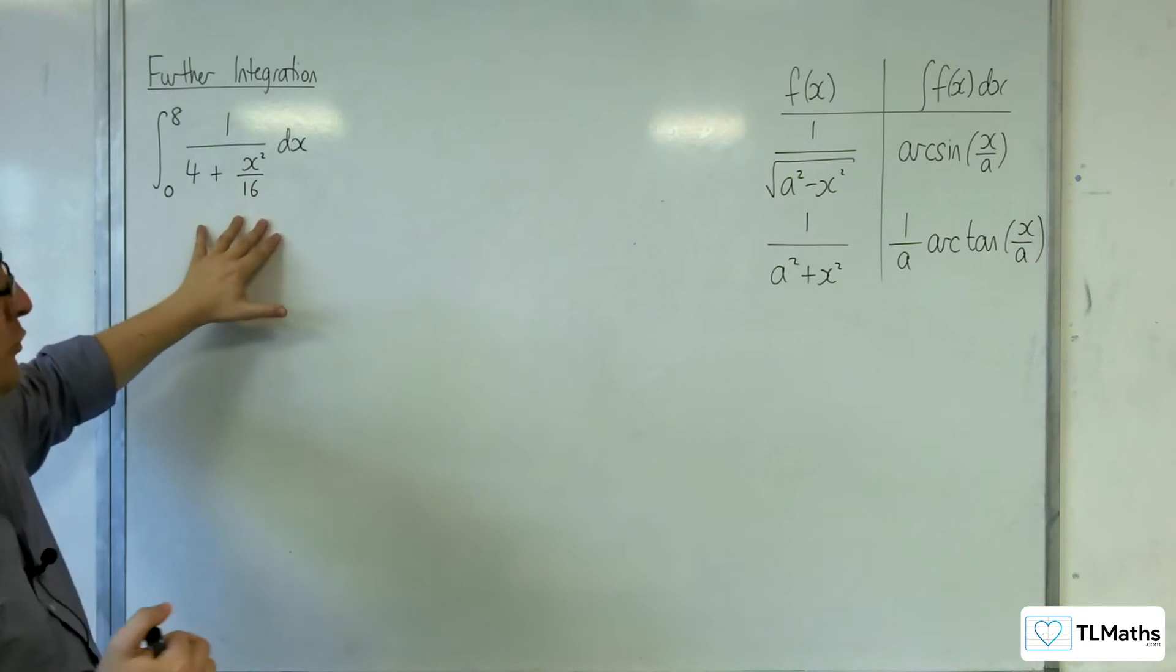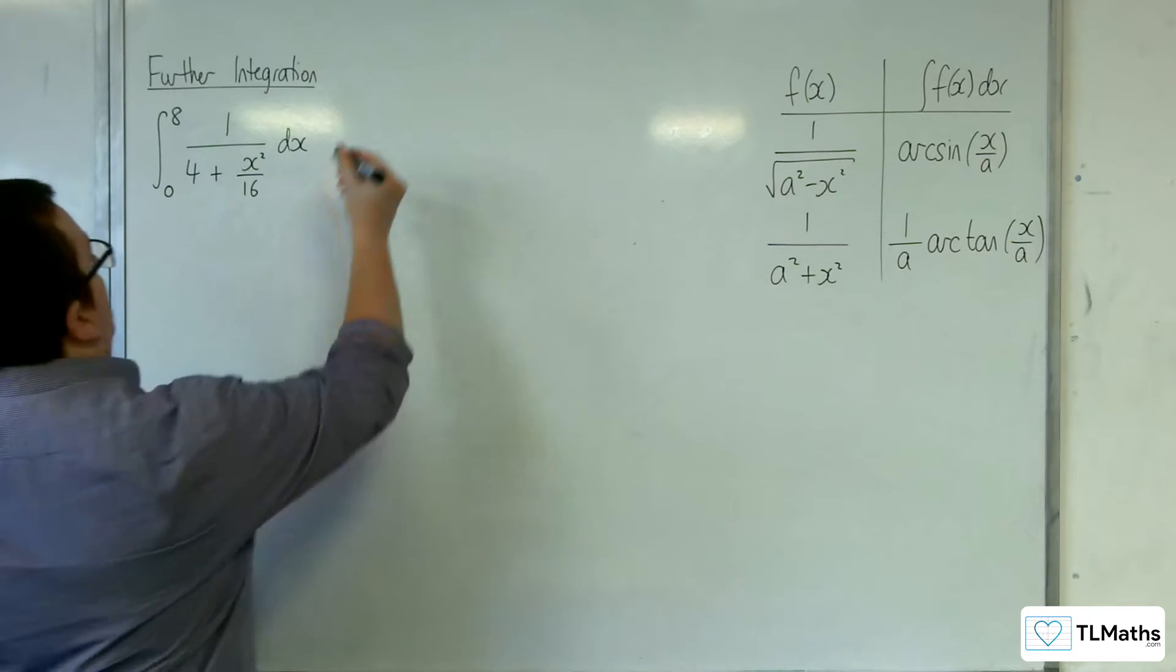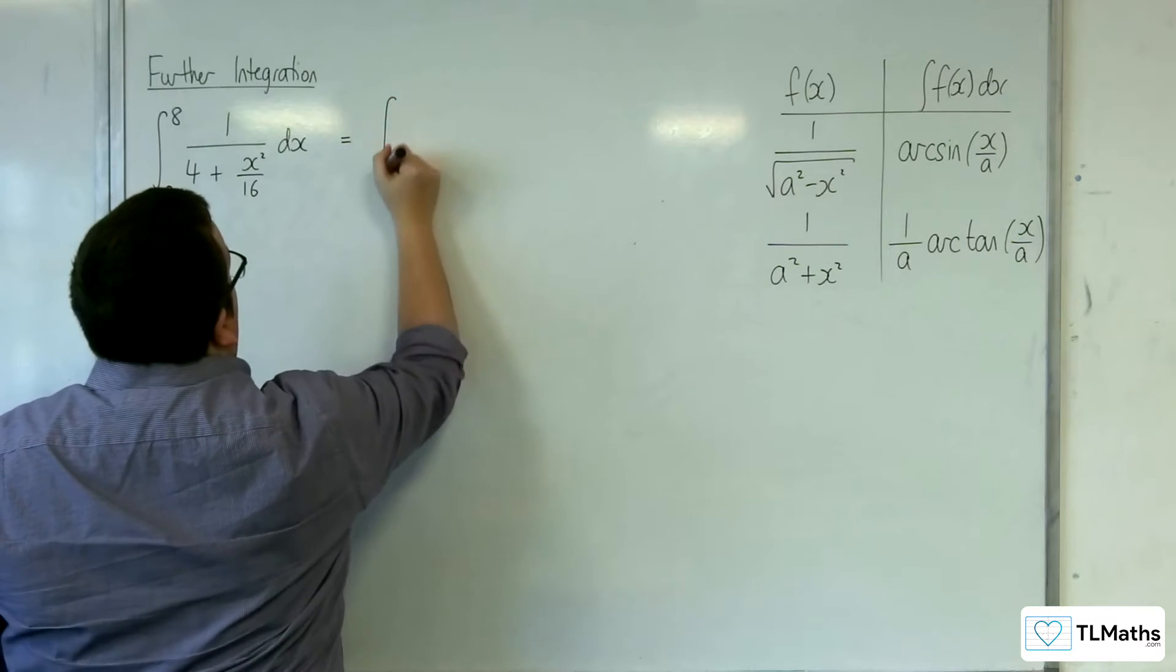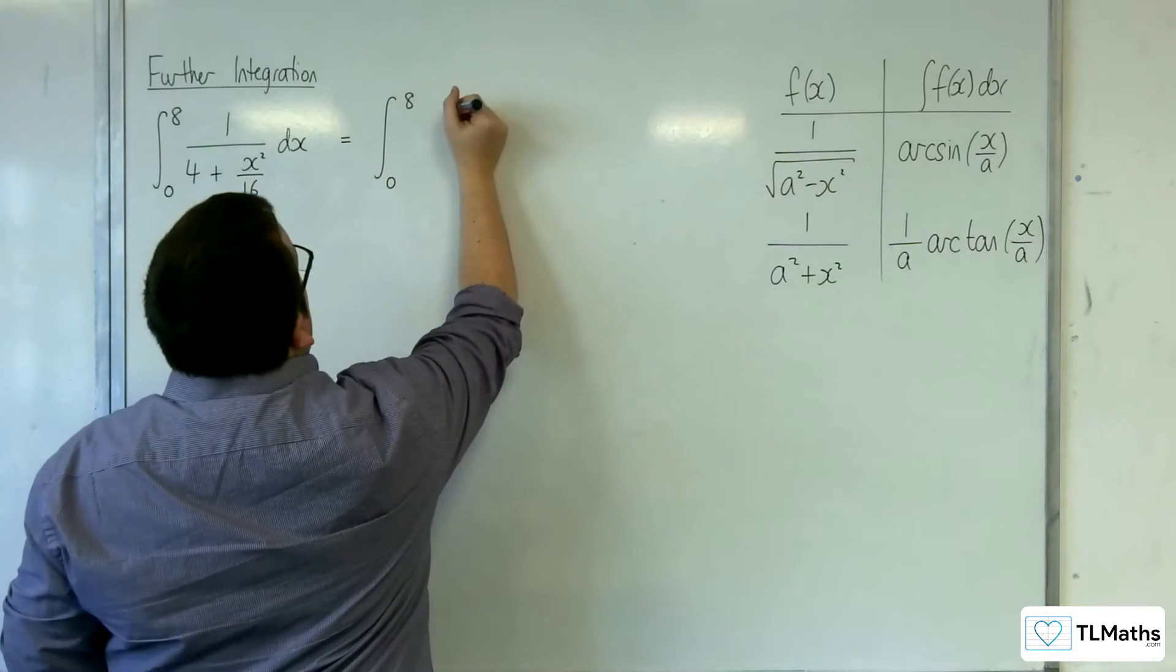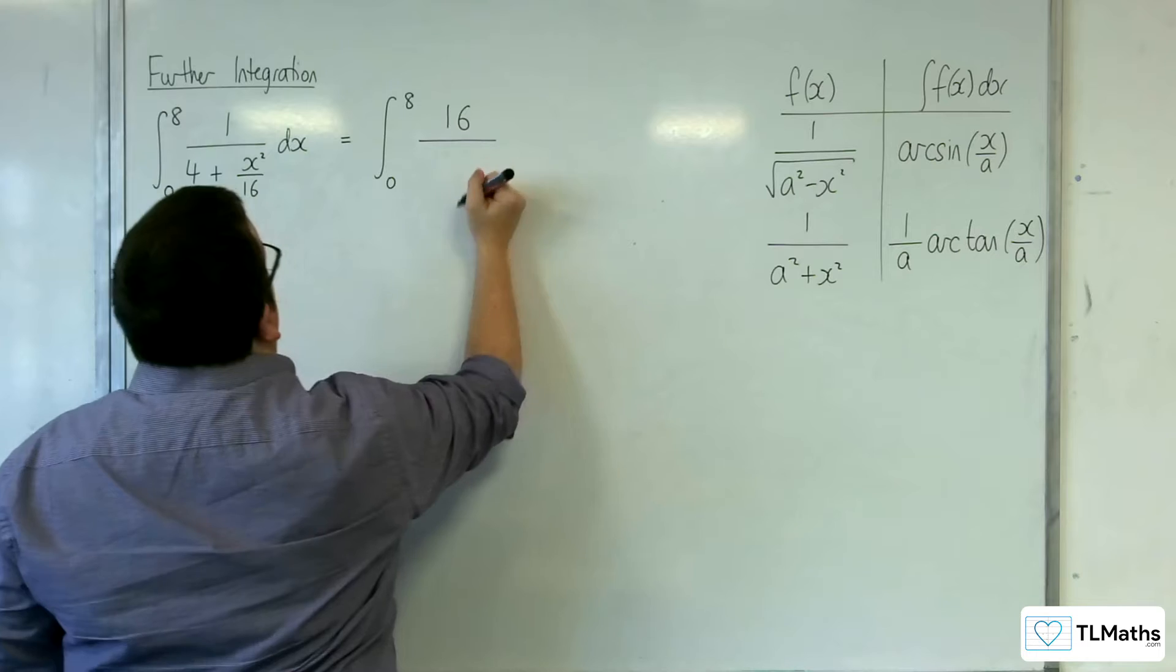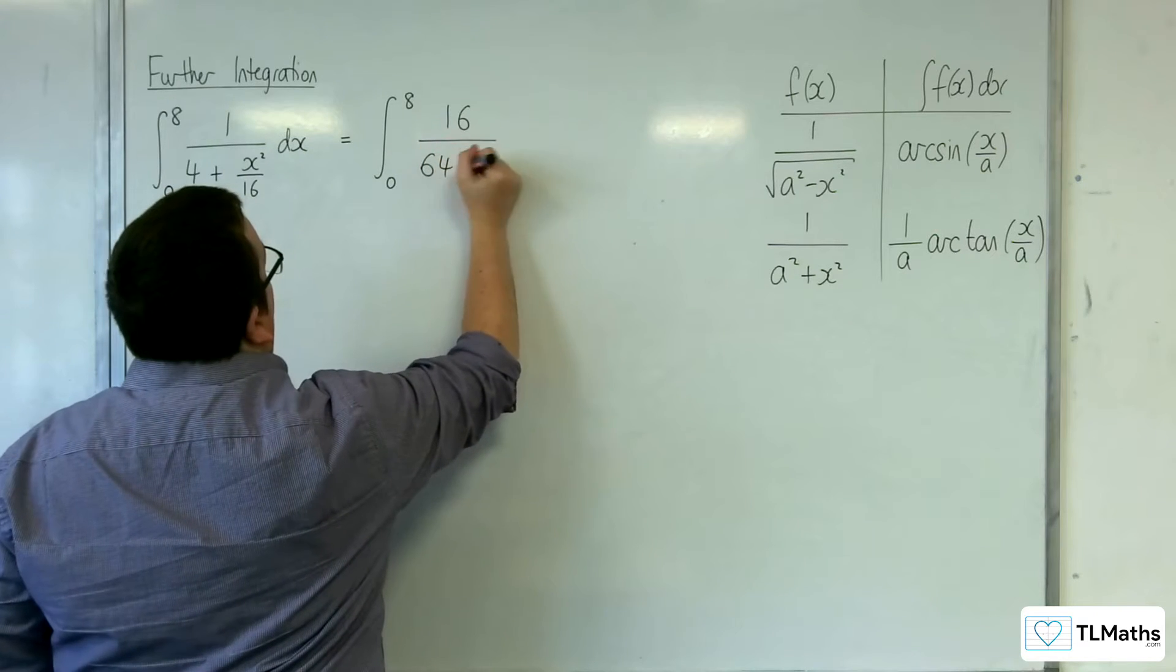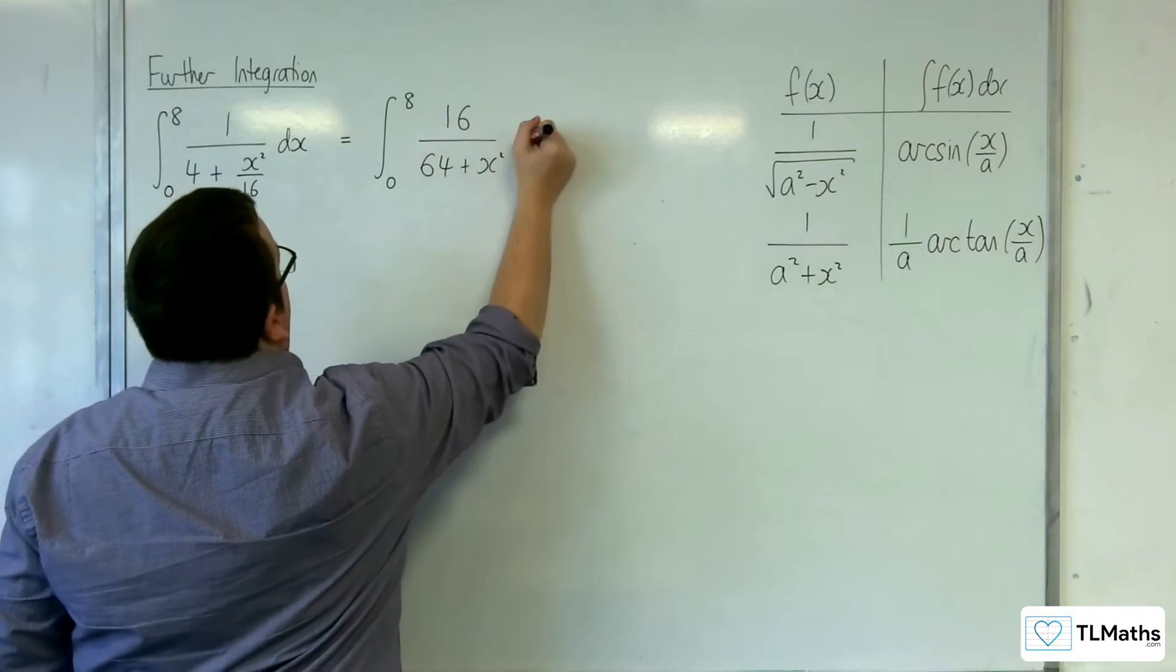So all I'm going to do is I'm going to multiply top and bottom by 16. That's all I'll do. So this one's easier to manipulate than the other with the square root sign. So we're going to get 16 over 4 lots of 16 is, of course, 64 plus x squared dx.